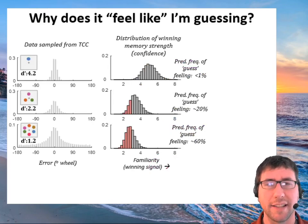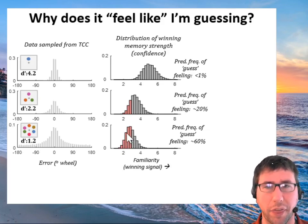And so if we just ask at different d-prime, say set size 1, 3, and 6, in data simulated from TCC how confident we'd expect people to be, what we find is that at set size 1 they're always going to be really confident. By the time they get to set size 6, about half the time they're going to be so low confident that you might imagine they feel like they're just guessing. This is confidence that is consistent with zero memory, d-prime of 0 can generate signals like this. And so you'd predict something like a 1%, 20%, and 60% chance of feeling like you're guessing.